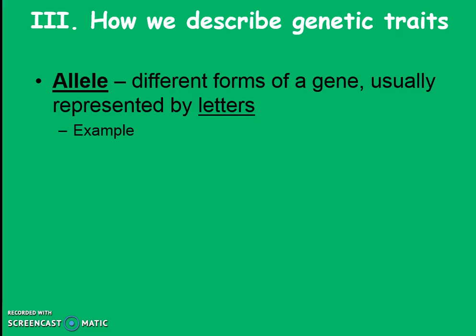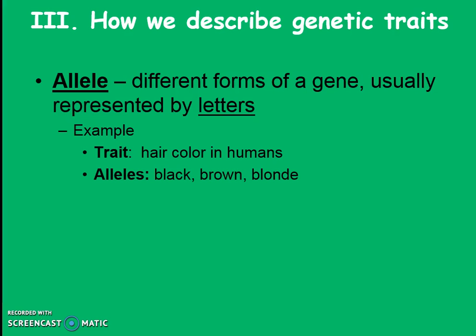We're going to represent alleles with letters. For humans, another example could be hair color. We have lots of different versions of the trait hair color, which would be in a gene. We have black, brown, blonde — all of those different versions, which we could represent with letters, are all alleles. So an allele is like different versions or different forms of a gene.